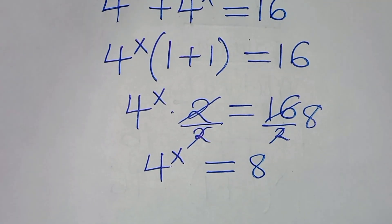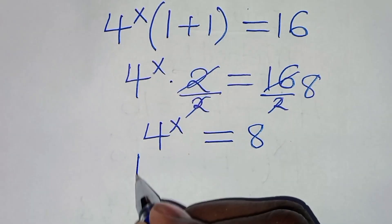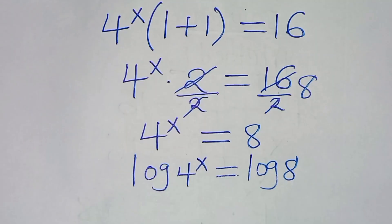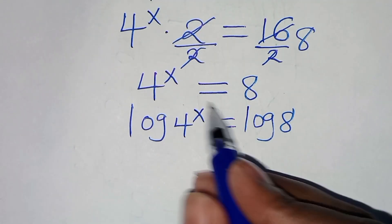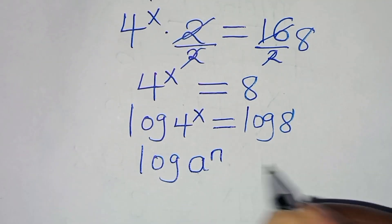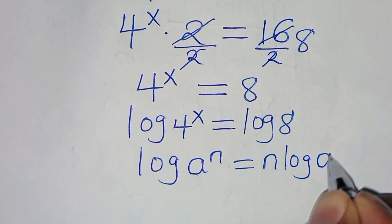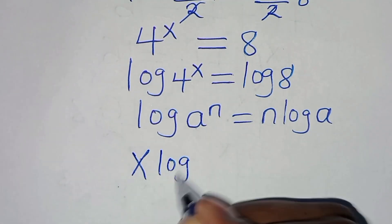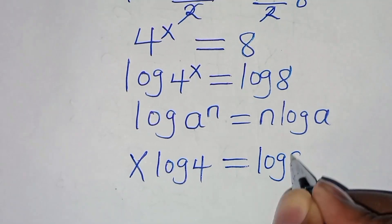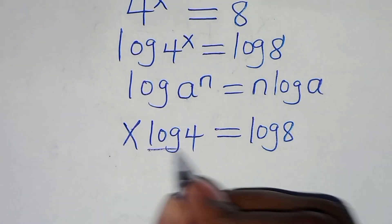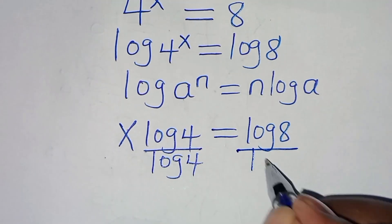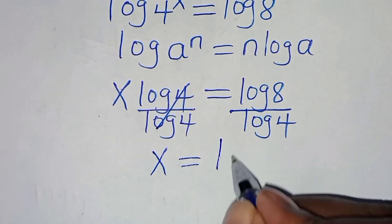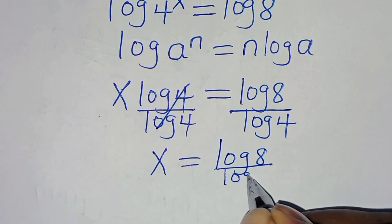To solve for x here, we introduce logarithm: log of 4 to the power x equals log 8 on both sides. You find that log 4 to the power x is in the form of log a to the power n, which we can express as n log a. Applying this power rule property of logarithm, log 4 to the power x becomes x log 4, equal to log 8. Dividing both sides by log 4, x is equal to log 8 divided by log 4.